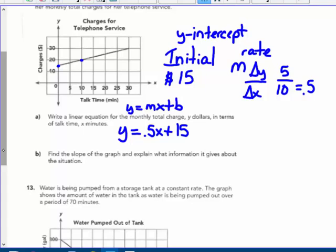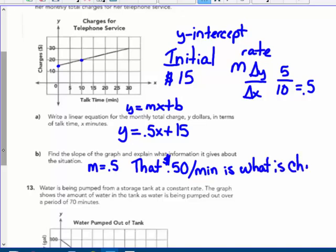Find the slope, oh I already did that. Find the slope of the graph and explain what information it gives about this situation. Well, the slope is 5 tenths or 50 cents, so it's telling me that 50 cents per—I'm going to use both labels—cents charge is dollars per minute is what is charged. Or the telephone company charges, say it that way, 50 cents per minute is what is the charge.